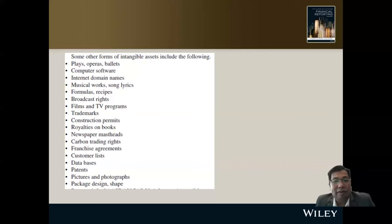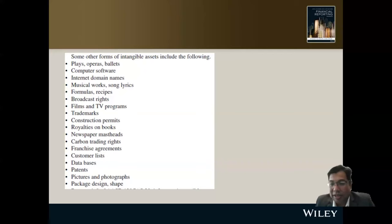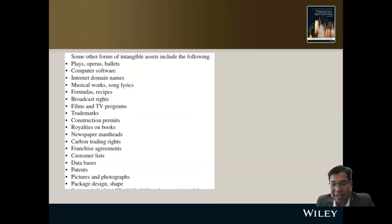Further examples include broadcast rights, film and TV programs, trademarks, construction permits, royalties on books, newspaper rights, carbon trading rights, franchise agreements, customer leases, databases, pictures and photographs, packaging design, and shapes — all can be considered intangible assets.